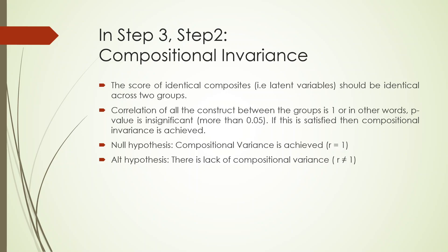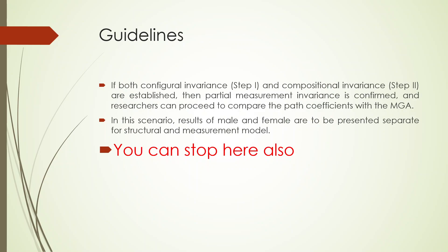If we have achieved configural invariance, we go for compositional invariance — comparing the correlation of two groups. The idealistic situation is that this correlation should be near to one, or the p-value should be more than 0.05. If satisfied, compositional invariance is achieved. The null hypothesis is that compositional invariance is achieved; the alternative is that there is a lack of compositional invariance. The desirable outcome is that the null is accepted. If both configural and compositional invariance are established, partial measurement invariance is confirmed and the researcher can proceed to compare path coefficients with MGA.